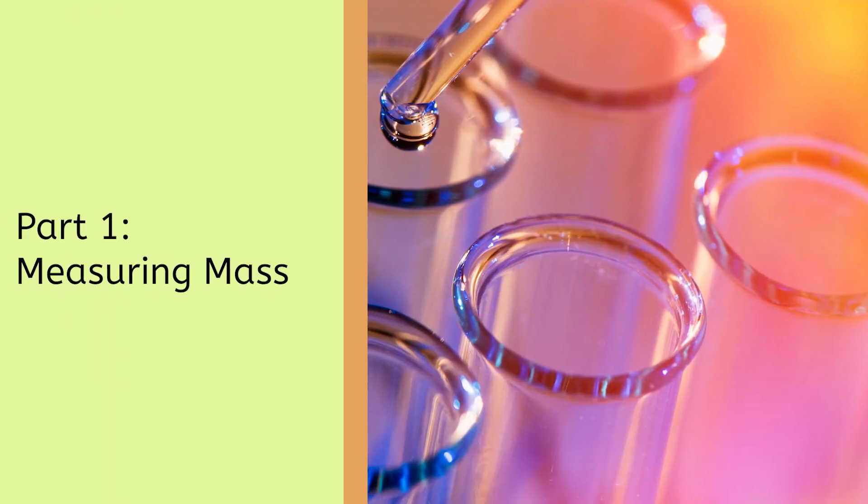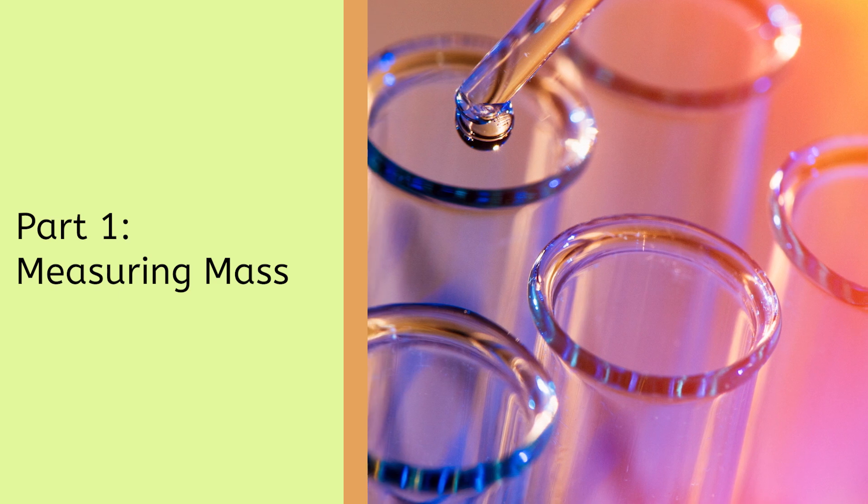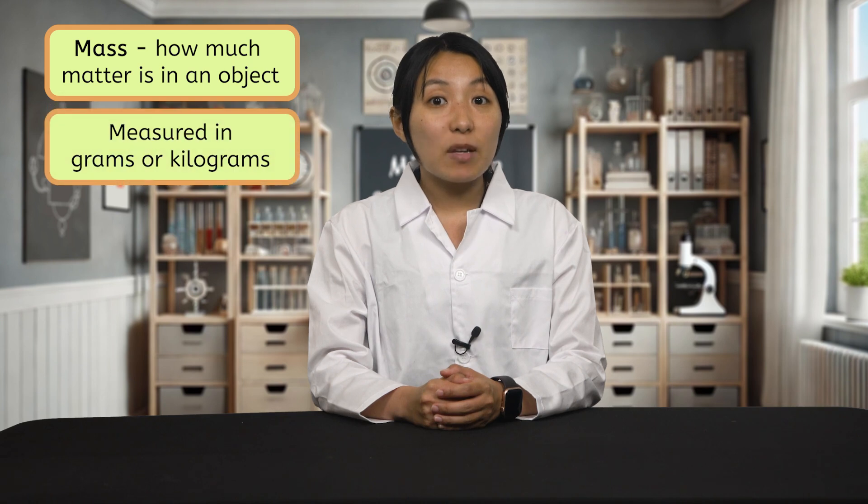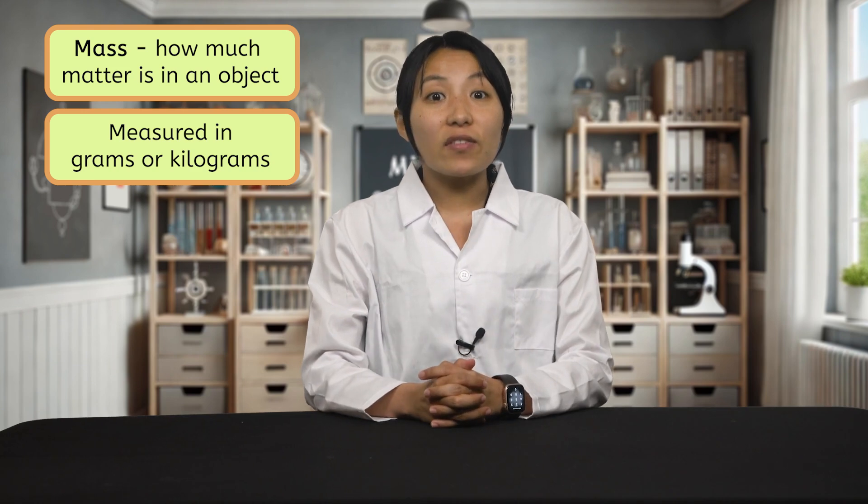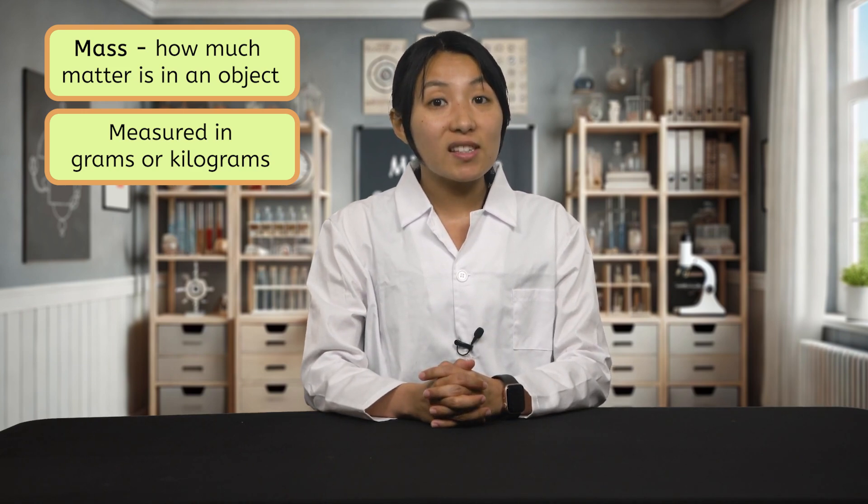Let's start with measuring mass. Mass tells us how much matter is in an object. Scientists measure this in grams or kilograms using a digital balance. The unit you use depends on the size of the object and the type of scale you have.